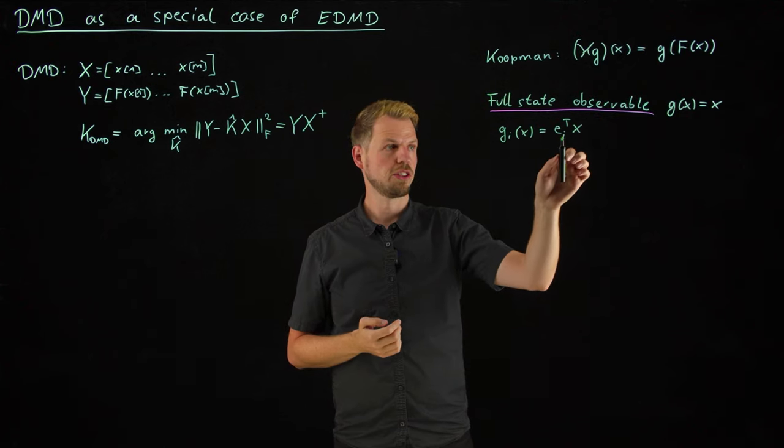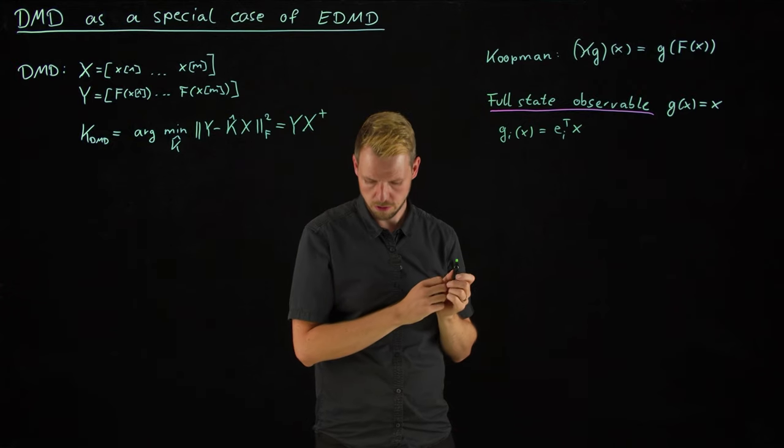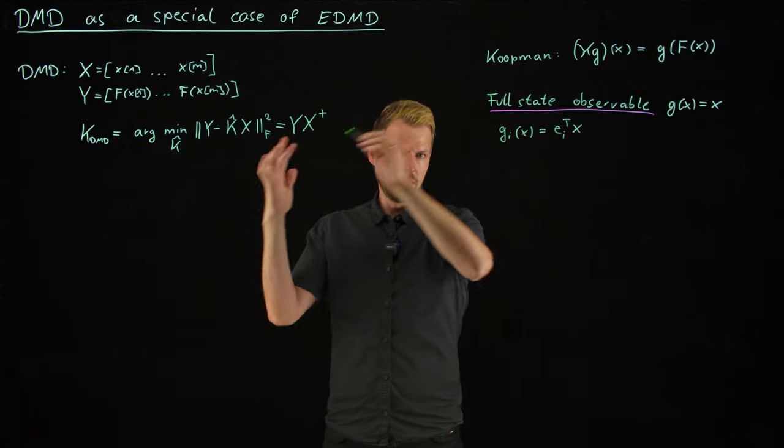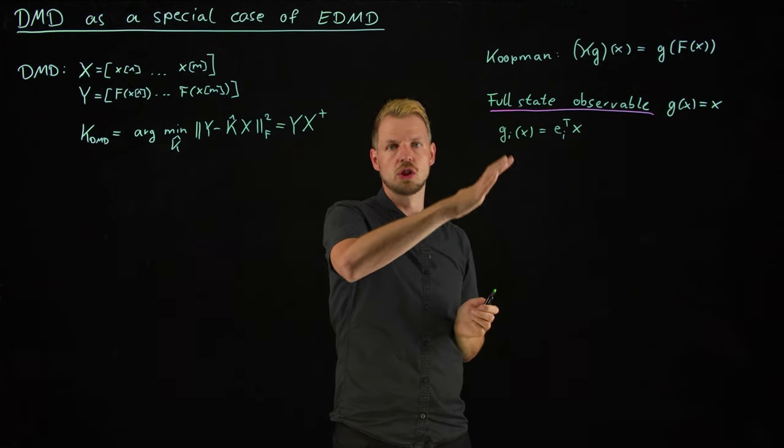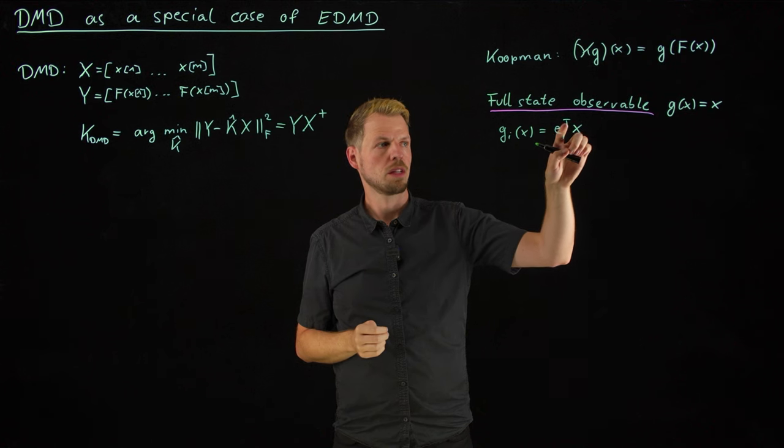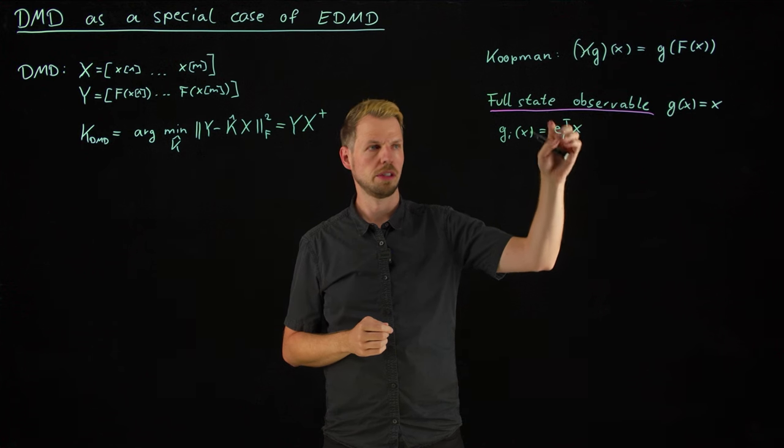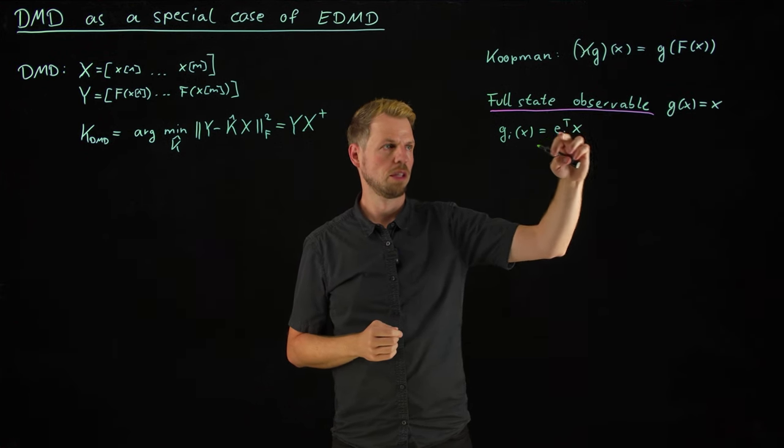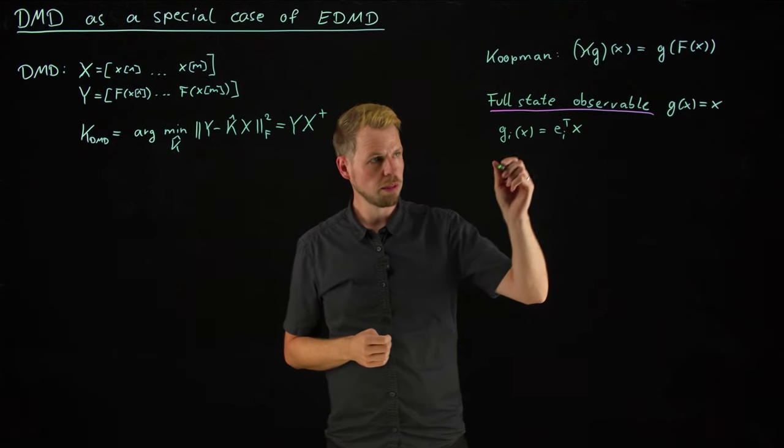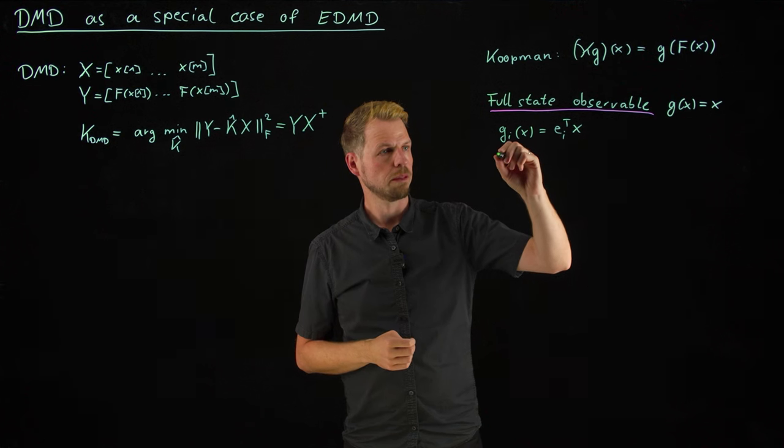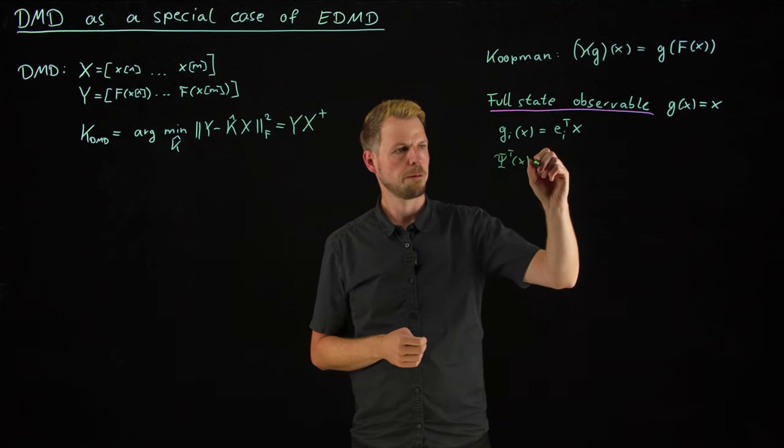But if we do so, then we can proceed. We always know we have to lift our data in terms of a dictionary psi. And what you see now is the dictionary is actually these Euclidean vectors mapping to the individual components. So DMD is a very special case of extended DMD, where as our dictionary psi, we simply pick the individual coordinates of our full state. So this is the individual components of psi of x being x.